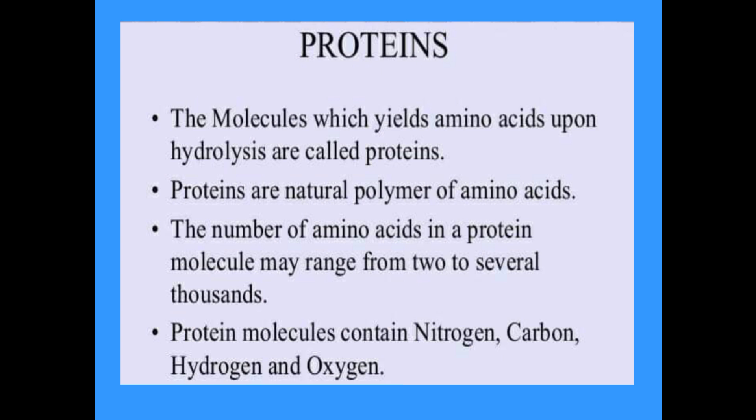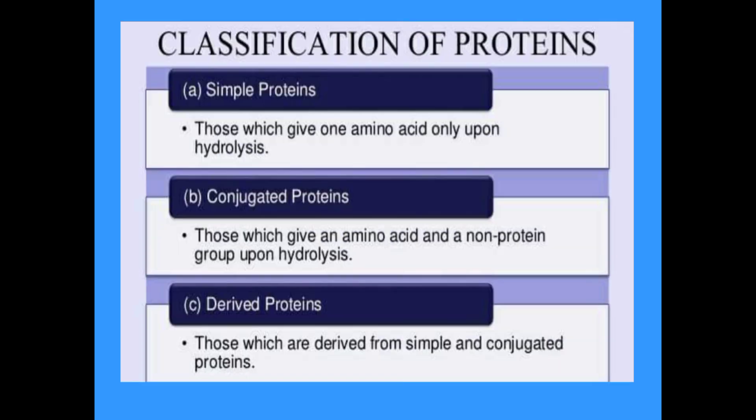Molecules which yield amino acids upon hydrolysis are called proteins. Proteins are natural polymers of amino acids; the number of amino acids in a protein molecule may range from two to several thousands, or up to 3,000. Protein molecules contain nitrogen, carbon, hydrogen, and oxygen. About 170 types of amino acids have been found in cells and tissues; of these, about 25 are constituents of proteins, and most proteins are made of 20 types. All amino acids have an amino group and a carboxyl group attached to the same carbon atom.